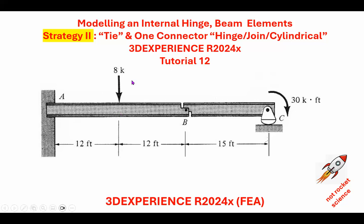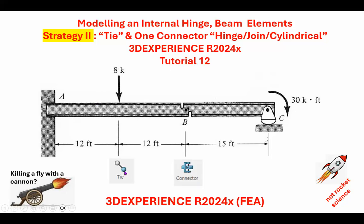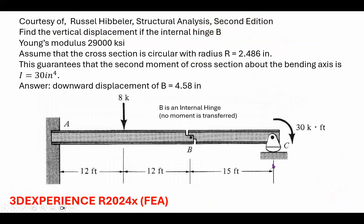What I want to do now is instead of introducing a connector here, I will create a tie functionality. A connector there is used because I want to release the moment resistance, but here I'm not going to use a connector as in tutorial 11. I'm going to create the tie node. This is a problem from Hibbeler's book, and with that radius cross section the displacement at point B should come out to be 4.58, as shown by the analytical solution in the last three slides.